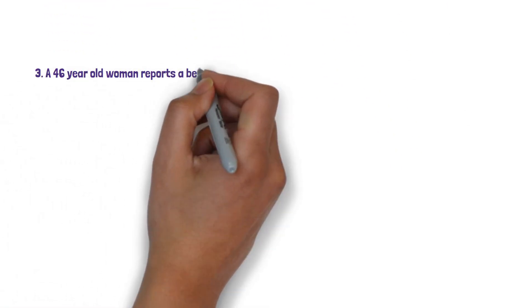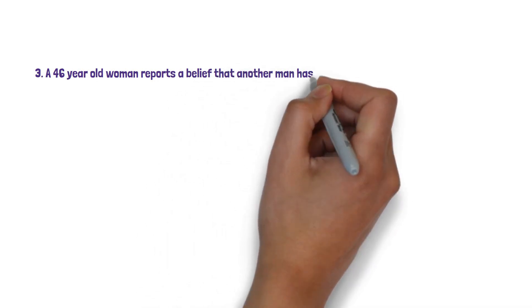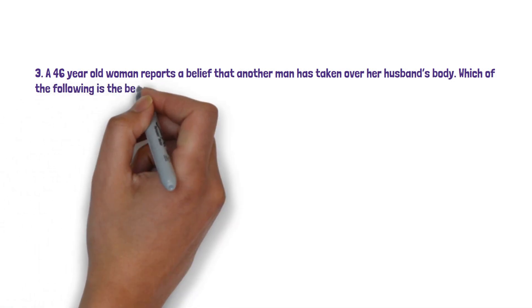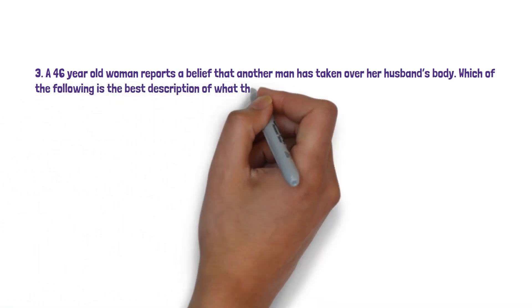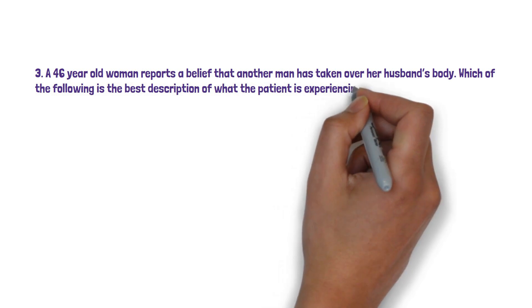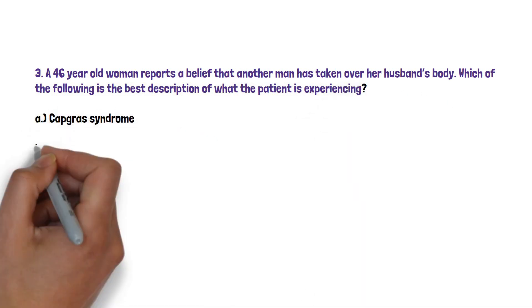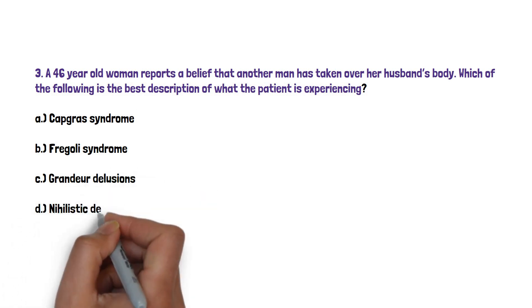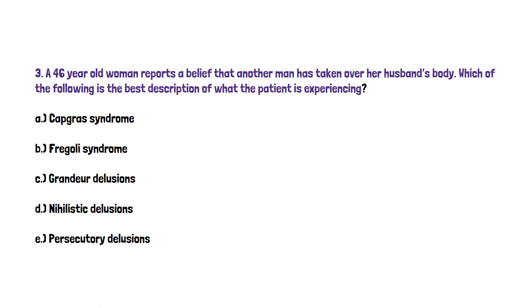Now let's move on to question three. A 46 year old woman reports a belief that another man has taken over her husband's body. Which of the following is the best description of what the patient is experiencing? A. Capgras syndrome. B. Fregoli syndrome. C. Grandeur delusions. D. Nihilistic delusions. Or E. Persecutory delusions.